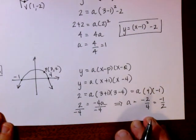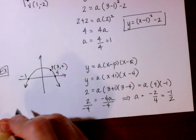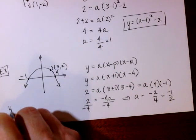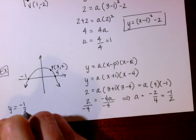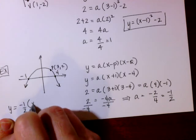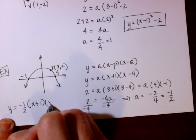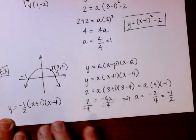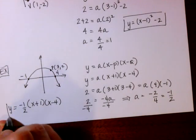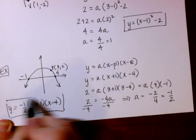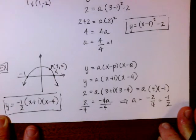Now I can write my equation. In factored form it's y equals −(1/2) times (x plus 1)(x minus 4), and that is the equation for that particular parabola.